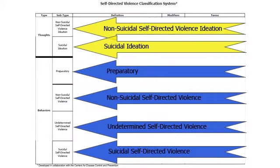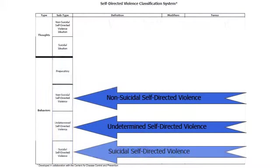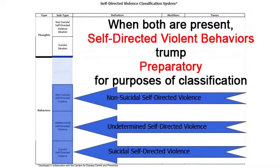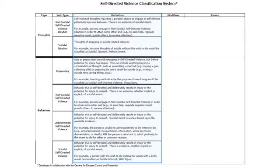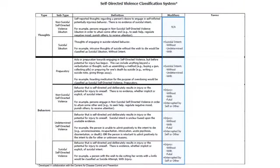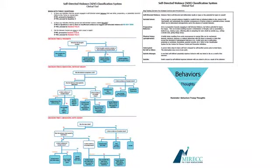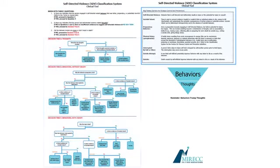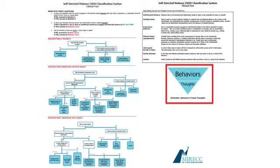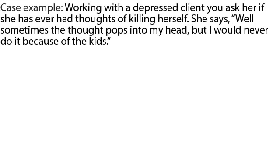On the next slide, you'll see that there are six subtypes of thoughts and behaviors. When both are present, self-directed violent behaviors trump preparatory behaviors for the purpose of classification. You'll also see the definitions of the subtypes, the modifiers, and the 22 terms. Next, pull out the self-directed violence classification system clinical tool. On the front side, there are some decision-making questions followed by three decision trees. On the back side are some key terms and a reminder regarding behaviors trumping thoughts.